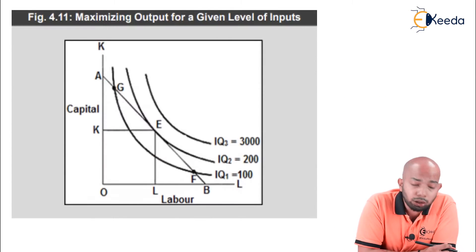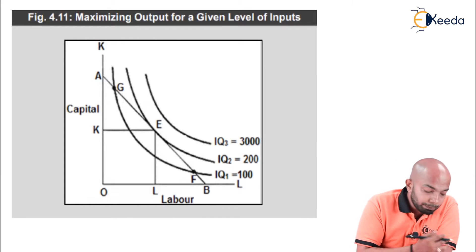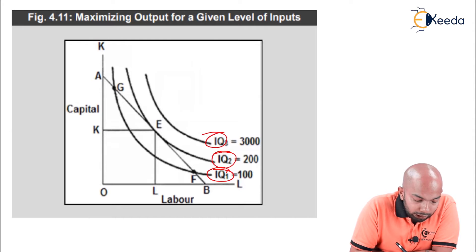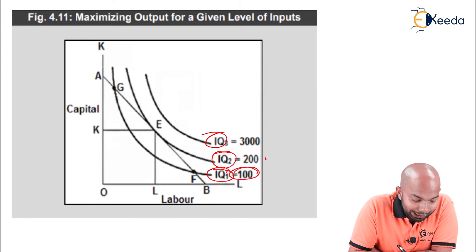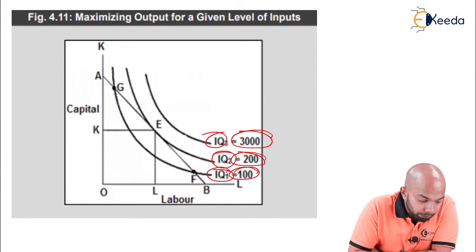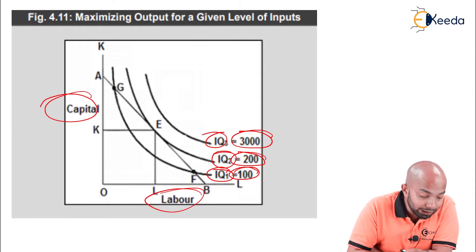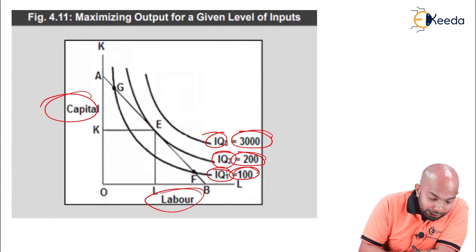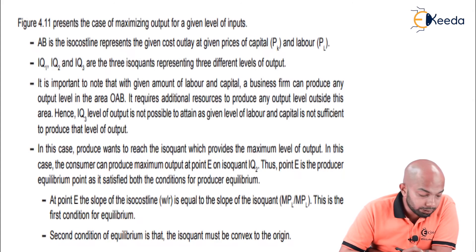When it comes to maximization of output at given inputs, we have three isoquant curves: IQ1, IQ2, and IQ3. IQ1 gives an output of 100, IQ2 gives 200, and IQ3 gives 3000. The Y-axis represents capital and the X-axis represents labor. These are the isoquant curves shown in the diagram.